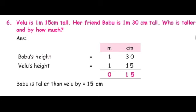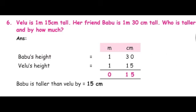Shall we move to the solution? Babu's height is 1 meter 30 centimeters, Veilu's height is 1 meter 15 centimeters. We want to find out who is taller — just compare: 30 centimeters or 15 centimeters? 30 centimeters. Who has 30 centimeters? Babu. So Babu is taller than Veilu. By how much? We subtract: 30 minus 15 equals 15 centimeters. Babu is taller than Veilu by 15 centimeters.